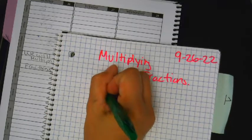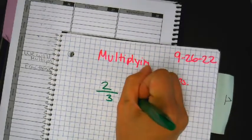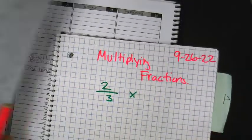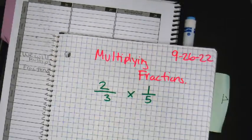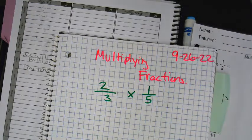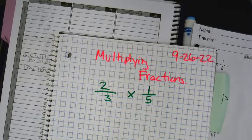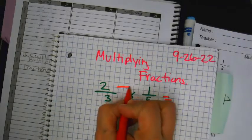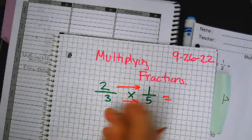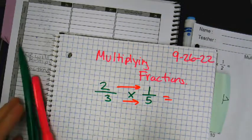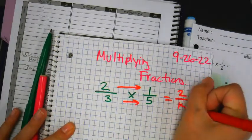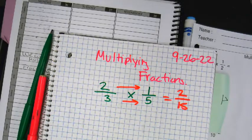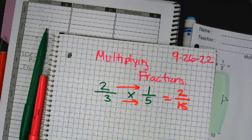So if I have 2 thirds times 1 fifth — when you multiply fractions you literally just multiply straight across. That's it? That's it. So you just multiply straight across. 2 out of 15. You are multiplying. That is it.